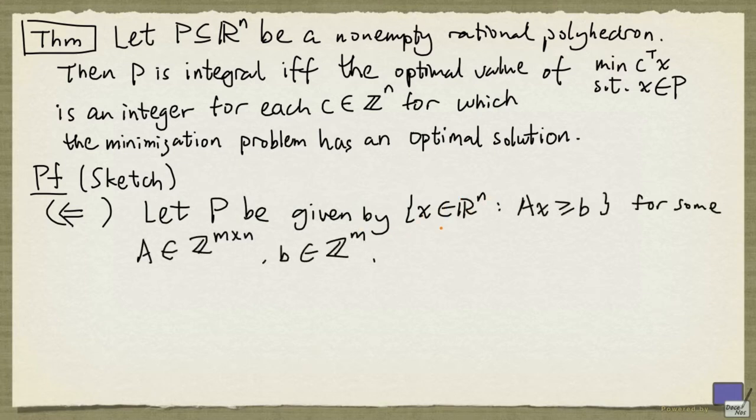p is the set of x in R^n satisfying Ax greater than or equal to b for some matrix A with integer entries and a tuple b with integer entries. This is possible because p is rational and it can be defined by some rational system. By clearing fractions, we can assume that all the entries are integers.